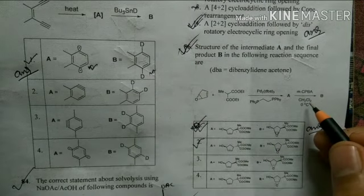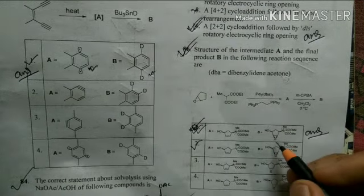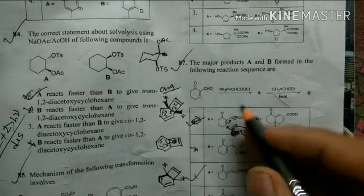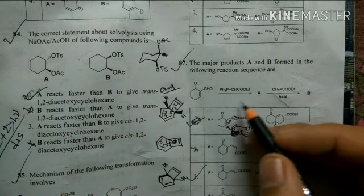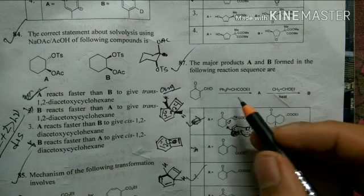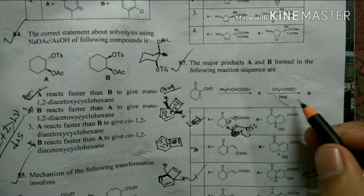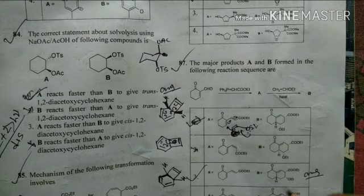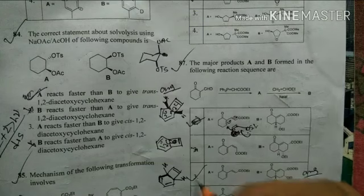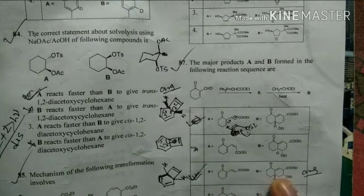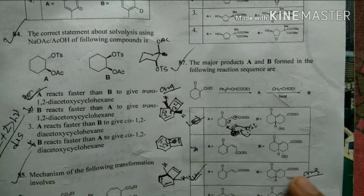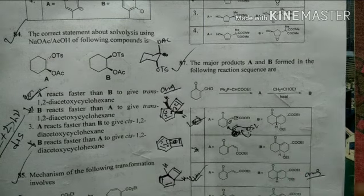In the palladium-catalyzed reaction, the OH group and the large nucleophile are on the same side. After that, meta-chloroperoxybenzoic acid (mCPBA) epoxidation occurs from the same side as the OH group, so option 1 is the correct answer. The next question involves a Wittig reaction using a stabilized ylide, giving the trans product, followed by a cycloaddition — considering diastereoselectivity, option 3 is the correct answer. The relationship between the two products is an ortho relationship.